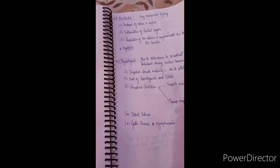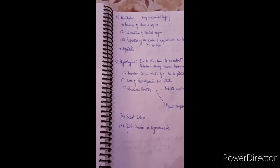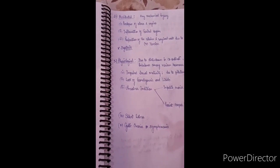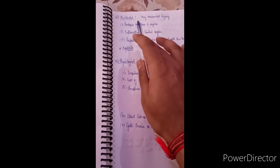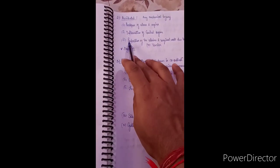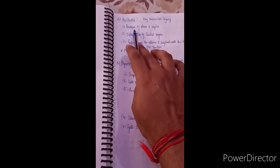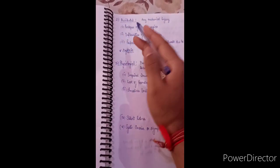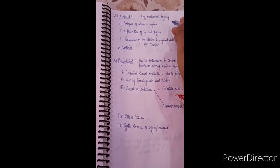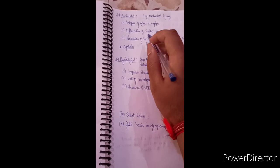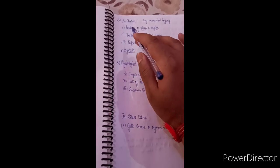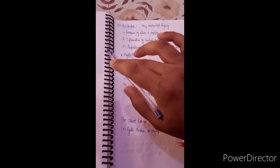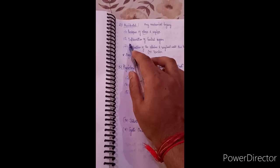The next category is accidental causes. Accidental causes mean any kind of injury that results in sterility. One important accidental cause is prolapse of the uterus and vagina, which generally occurs at the time of parturition. During parturition, the complete uterus and vagina are expelled outside along with the fetus, and it is very difficult to reinsert the uterus and vagina back inside the body. This is an accidental cause of sterility.